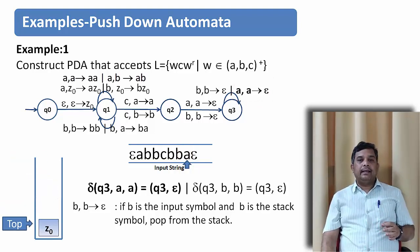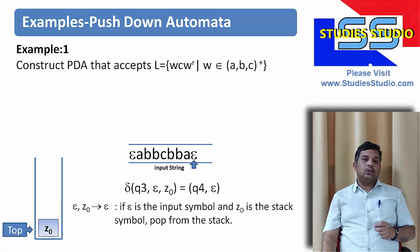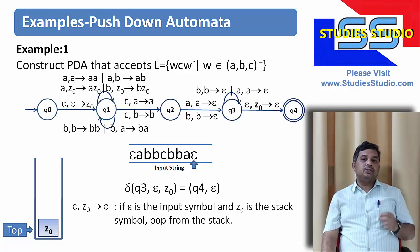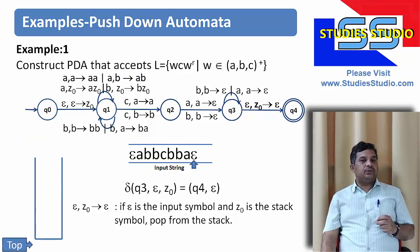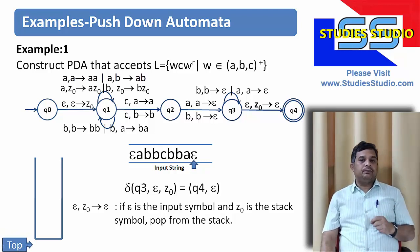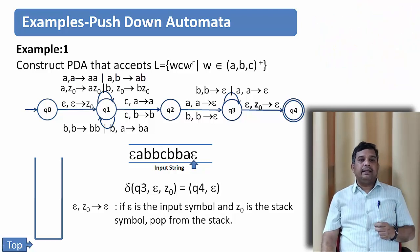We remain in state Q3. Now in the input string we have epsilon and Z0 is at the top of the stack. We pop Z0 and go to state Q4. Now epsilon is at the input and epsilon is at the top of the stack, so we can see that the string is accepted by this pushdown automaton.